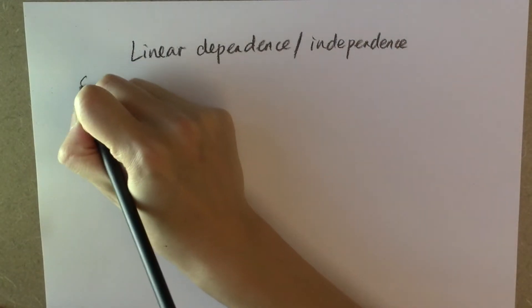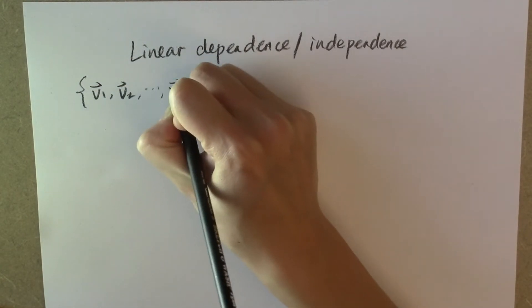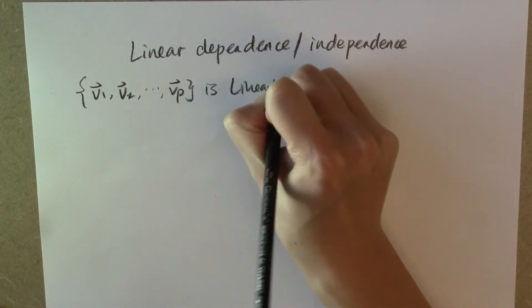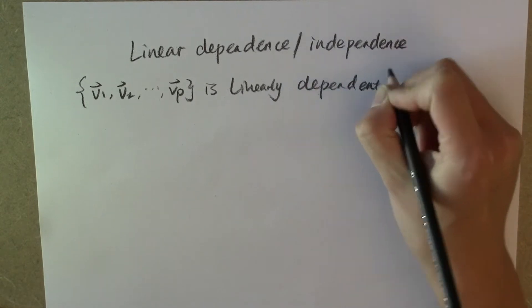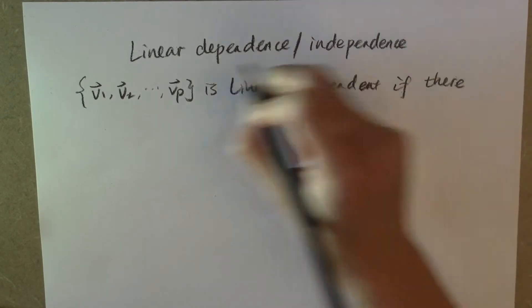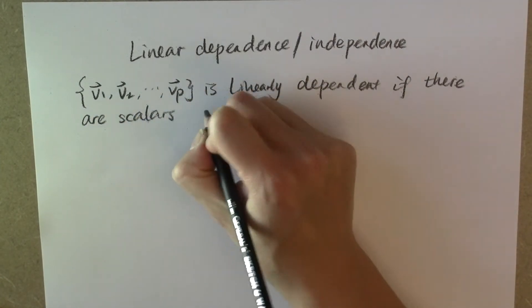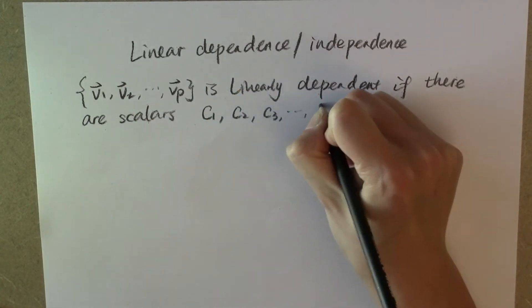By definition, a set of vectors v₁, v₂, ..., vₚ is said to be linearly dependent if there are scalars c₁, c₂, c₃, ..., cₚ